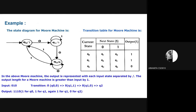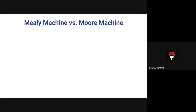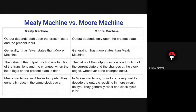The entire Moore machine has been solved. The input is 0 1 0, and the transition function delta goes from Q0 on input 0, then from Q1 on input 1, and then from Q0 on input 0, producing the output Q2. Now we have the comparison of the Mealy machine and the Moore machine.